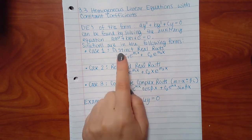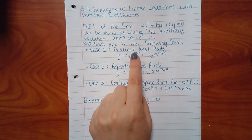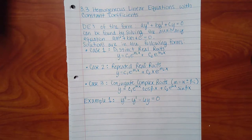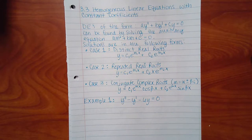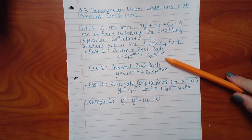The three cases from a quadratic are: two distinct real roots, two repeated roots, or complex roots. You'll either get two different numbers, the same number repeated twice, or imaginary numbers. Those are the only kinds of answers you can get from a quadratic, and depending on which situation you get, it tells you how you're going to write your general solution.